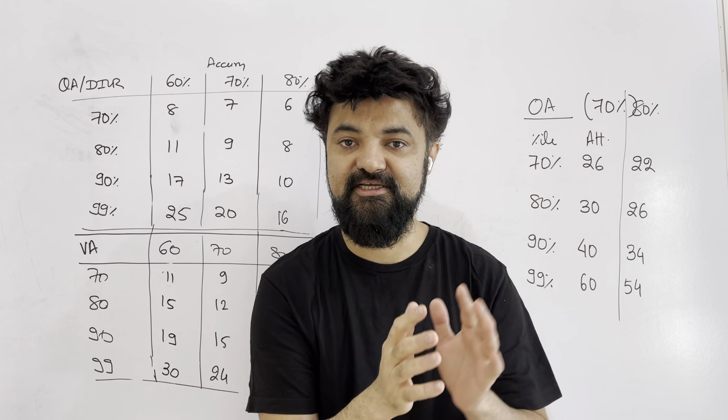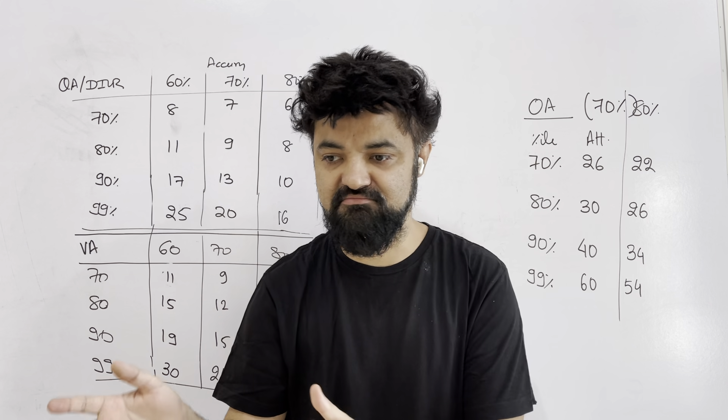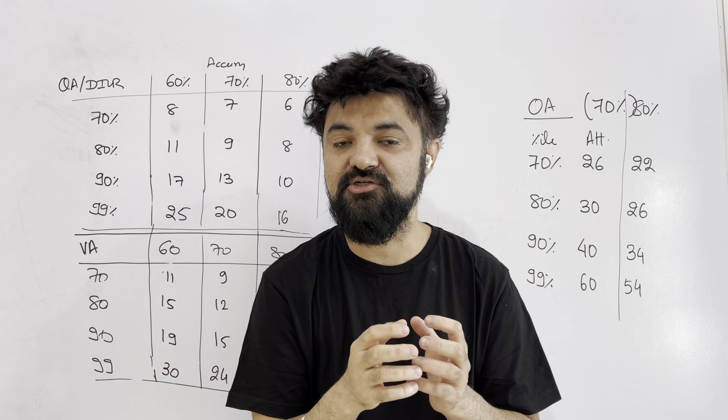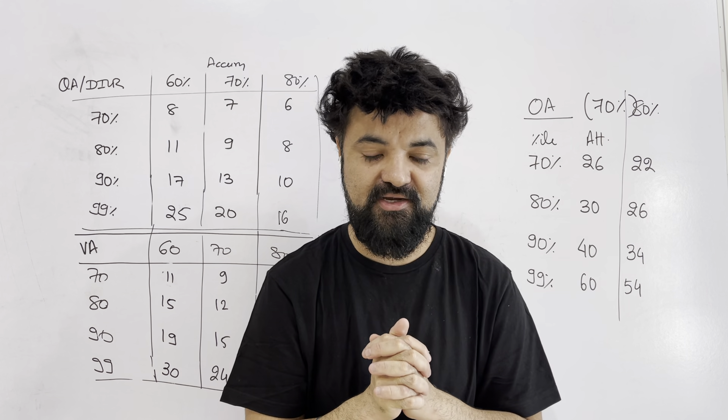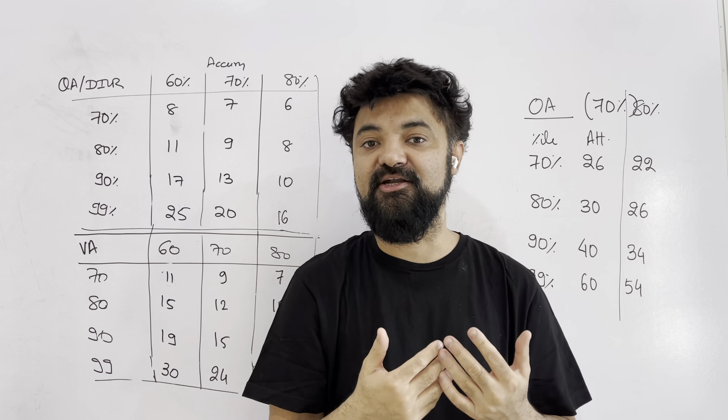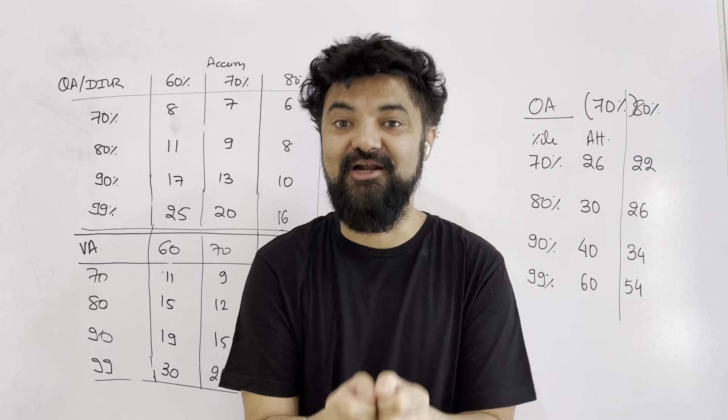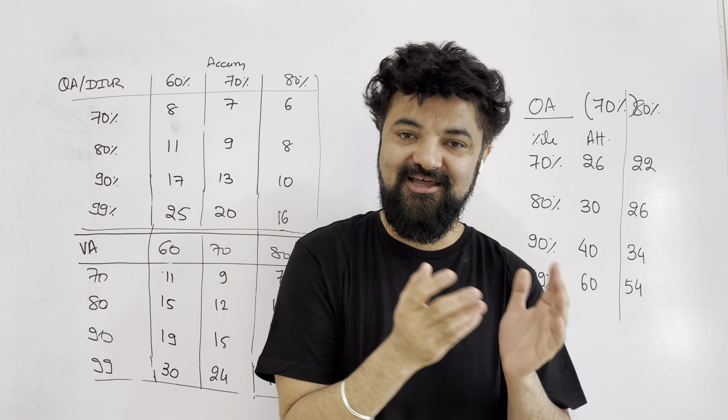Hi guys, 10 questions correct is 90 percentile, 12 questions correct is 80 percentile. All these things, all these numbers are good to have but when I am giving the exam it doesn't matter to me because I want to know how many questions to attempt.